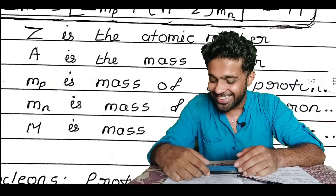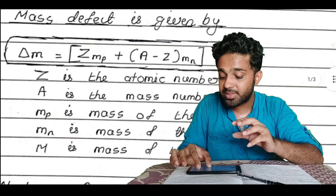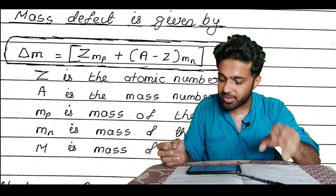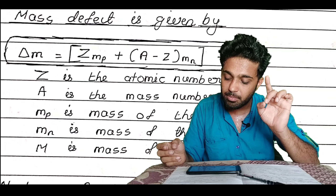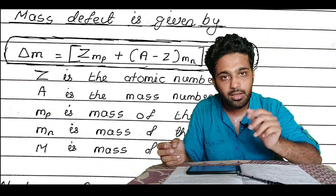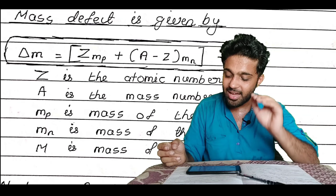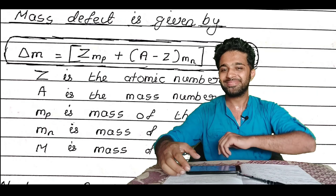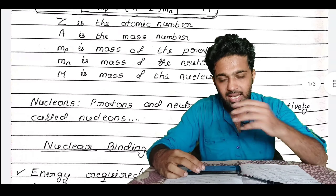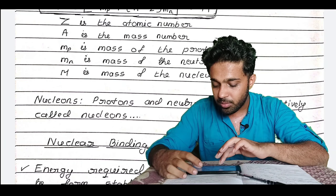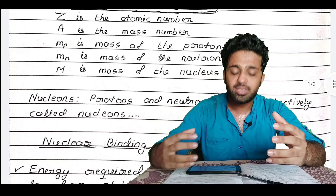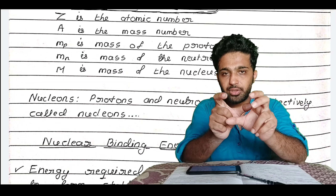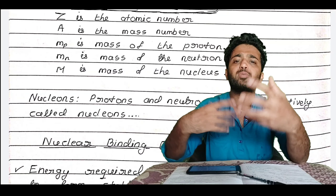In the equation for mass defect: Z is the atomic number, A is the mass number, mp is the mass of the proton, mN is the mass of the neutron, and capital M is the mass of the nucleus. Protons and neutrons are collectively called nucleons.